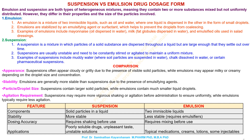Suspension versus emulsion drug dosage form. Emulsion and suspension are both types of heterogeneous mixtures, meaning they contain two or more substances mixed but not uniformly distributed. However, they differ in their properties and the size of the particles involved.